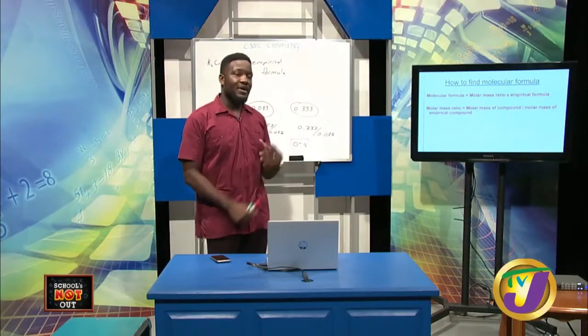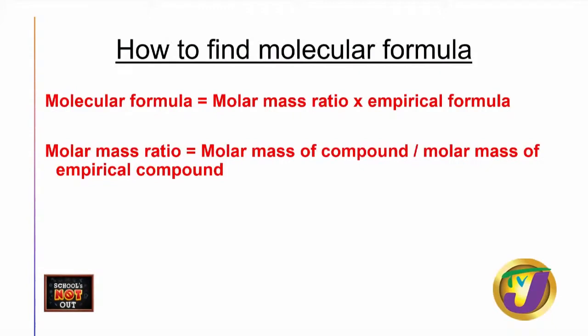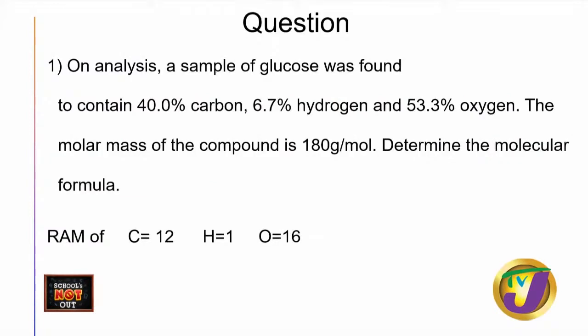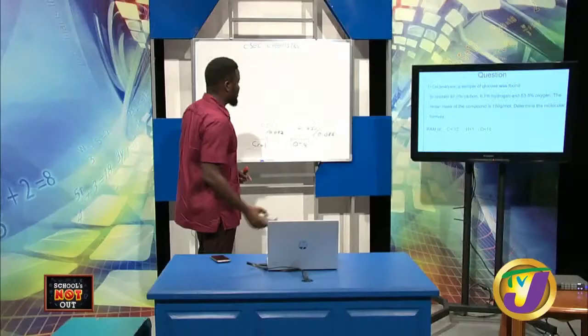Now what about molecular formula? The molecular formula equals the molar mass ratio times the empirical formula. The molar mass ratio is found by taking the molar mass of the compound given in the question and dividing it by the molar mass of the empirical formula. Let's look at a sample question.